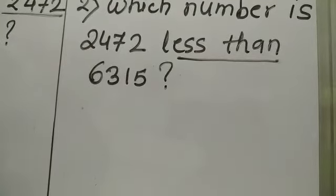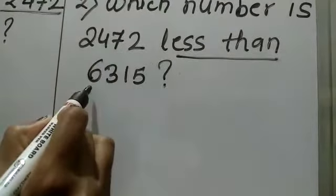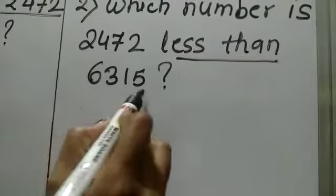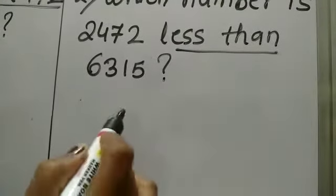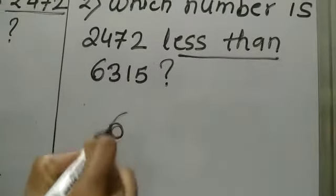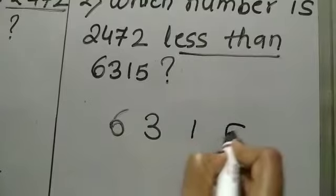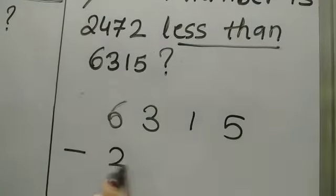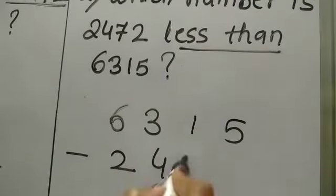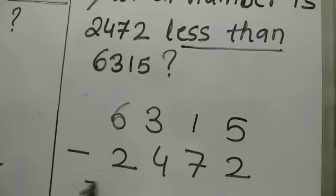So always remember, whenever you see the word 'less than' in the question, you always subtract. So here I am going to subtract the number 2472 from the number 6315. So first I write 6315 and then I am going to subtract the number 2472 from it.